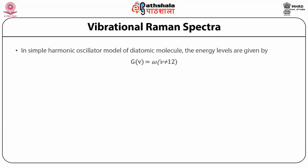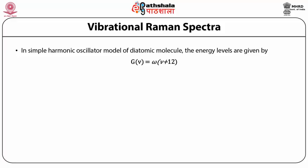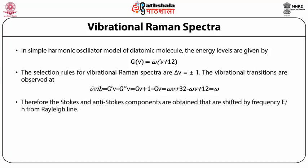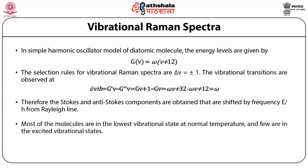Vibrational Raman spectra. In the simple harmonic oscillator model of a diatomic molecule, the energy levels are given by G(ν) = ω(ν + 1/2). The selection rules for vibrational Raman spectra are Δν = ±1. The vibrational transitions are observed at ν_vibrational = G(ν+1) − G(ν) = ω(ν + 3/2) − ω(ν + 1/2) = ω. Therefore, the Stokes and anti-Stokes components are obtained shifted by frequency E/h from the Rayleigh line. Most molecules are in the lowest vibration state at normal temperature and few are in excited vibration states.